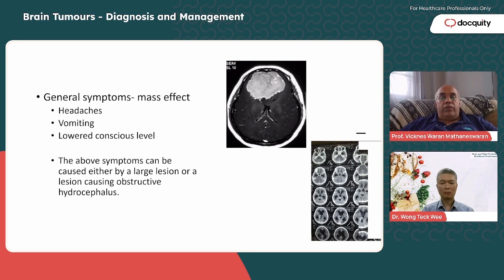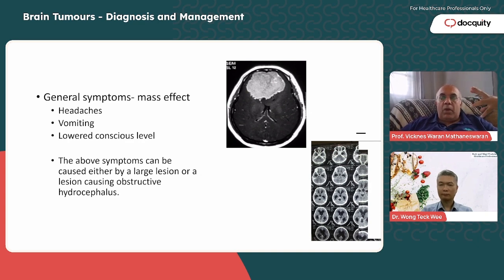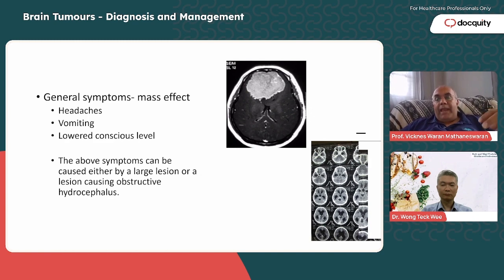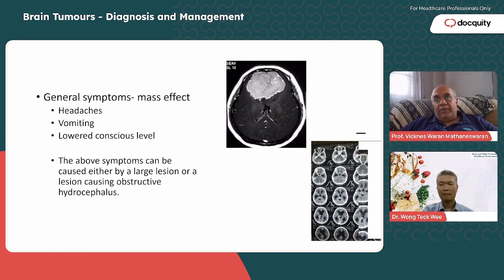These headaches are also associated with vomiting, classically described as projectile — the patient vomits without any nausea, suddenly bringing everything out — and progressively lowered conscious level as the tumor compresses the brain. The rise in ICP occurs for two main reasons: one is the mass of the tumor itself, or sometimes a very small tumor in an awkward position — such as sitting in the brainstem or midbrain — compressing the aqueduct of Sylvius, causing secondary hydrocephalus.